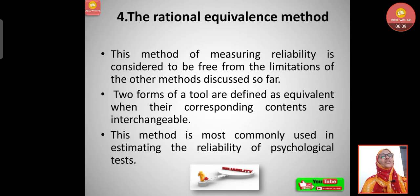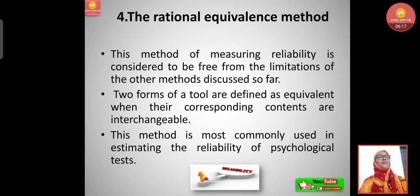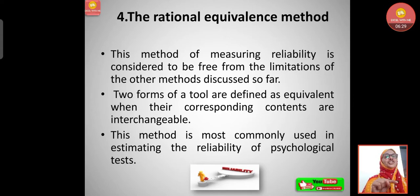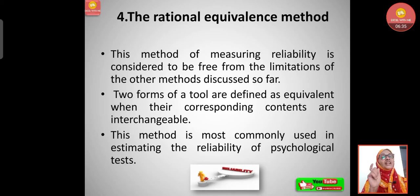The fourth is the rational equivalence method. This method is considered free from the limitations of the other methods discussed so far. Two forms of a tool are defined as equivalent when their corresponding contents are interchangeable. This method is most commonly used in estimating the reliability of psychological tests.